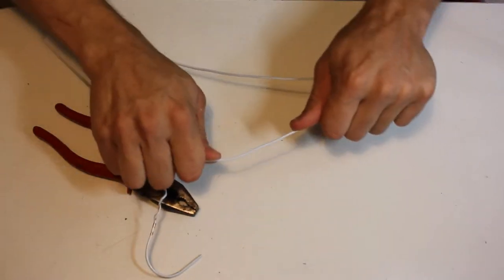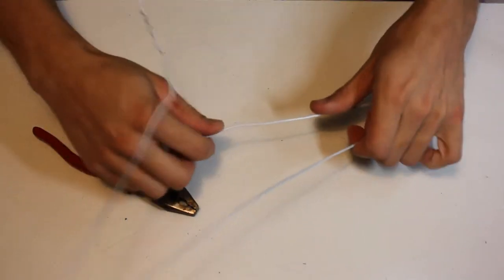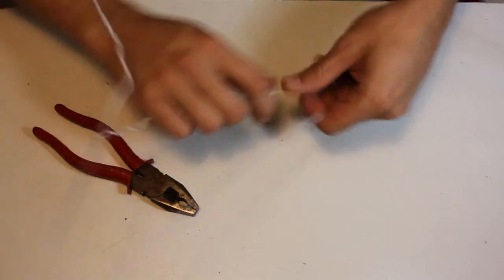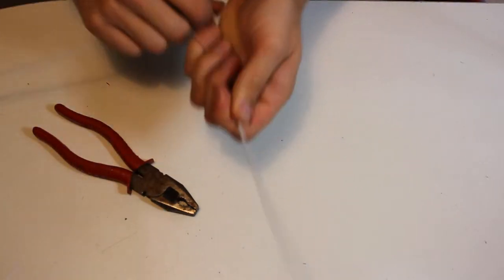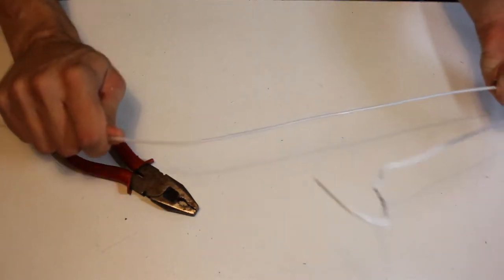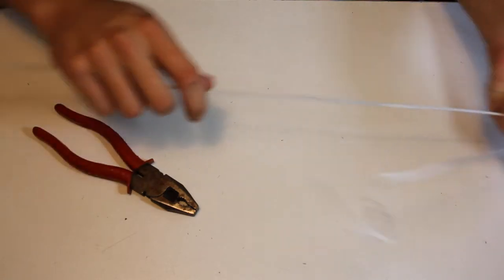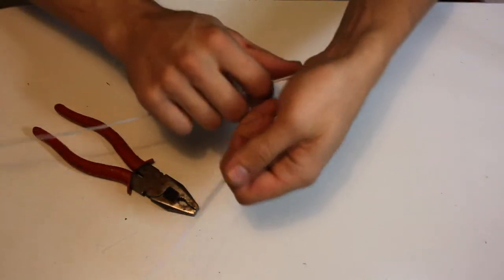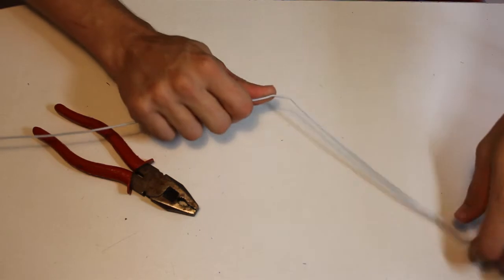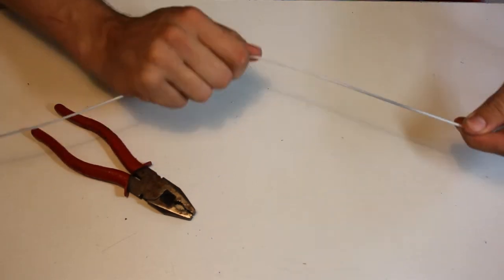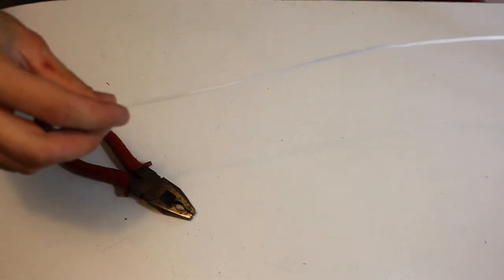And so, now we have our opened up coat hanger here. So, just by hand, we are going to straighten out the wire here. And this just gives us a nice starting place in terms of actually creating our tool. And so, we have a fairly straight wire here now.